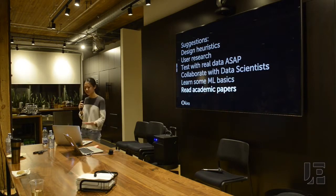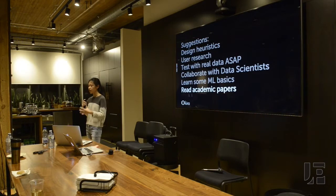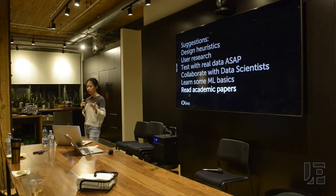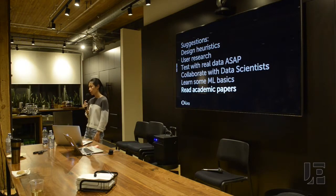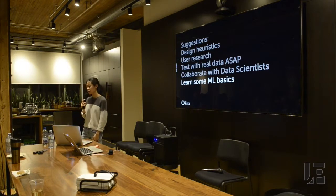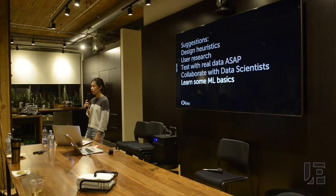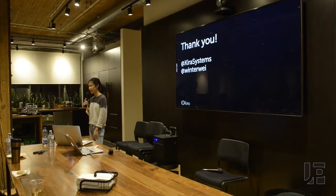And lastly, there are a lot of academic papers out there. A lot of people in academia are doing research to understand the design implications of information retrieval systems and recommendation systems. Google Scholar is a really great place to look for academic papers. For machine learning basics, Coursera has really good machine learning courses you can check out. So yeah, that's what I have to say today.